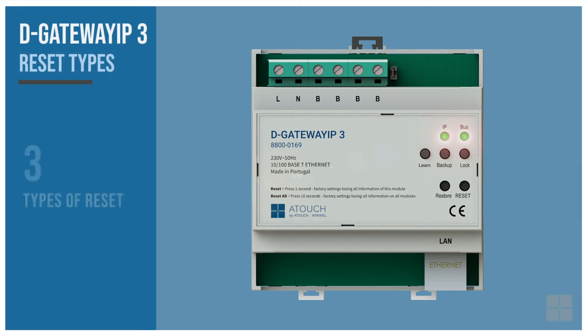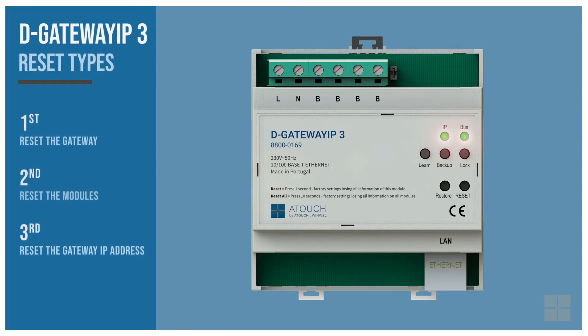On the D-Gateway IP version 3, we find three types of resets. The first affects only the gateway module. The second affects all other system modules. And the third involves only the gateway IP address setting. Let's see when to use each type of reset.